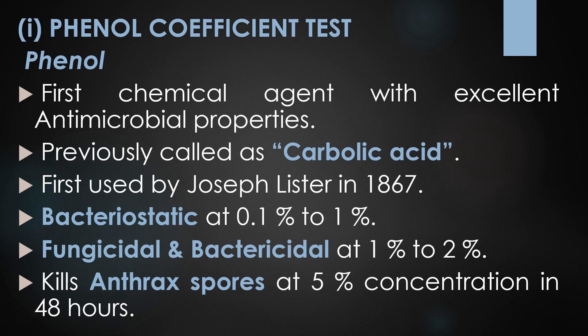The first test is the phenol coefficient test. Phenol was previously called carbolic acid and is recognized as the first chemical agent with excellent antimicrobial properties. It was used by Joseph Lister in 1867. At a concentration of 0.1% to 1%, phenol is bacteriostatic — it stops the reproduction of bacteria.